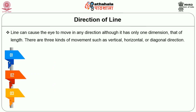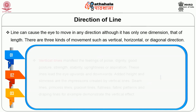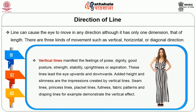Directions of line. Line can cause the eye to move in any direction although it has only one dimension, that of length. There are three kinds of movements: vertical, horizontal or diagonal direction. Vertical lines manifest the feelings of poise, dignity, good posture, strength, stability, uprightness or aspiration. These lines lead the eye upwards and downwards. Added height and slimness are the impressions created by vertical lines. Seam lines, princess lines, placket lines, fullness, fabric patterns and draping lines demonstrate the vertical effect.